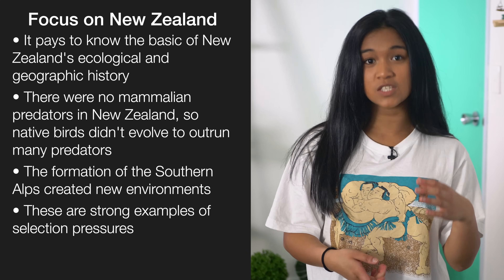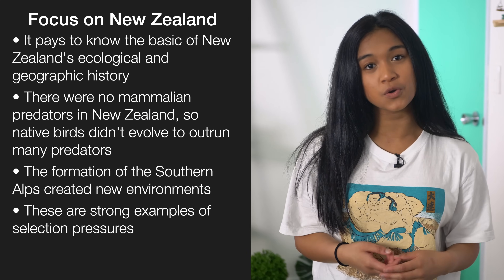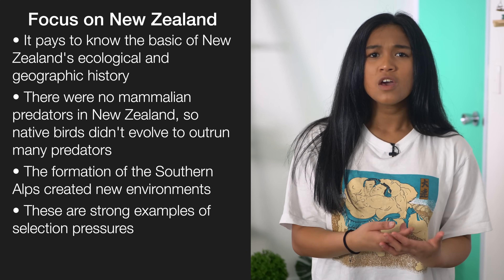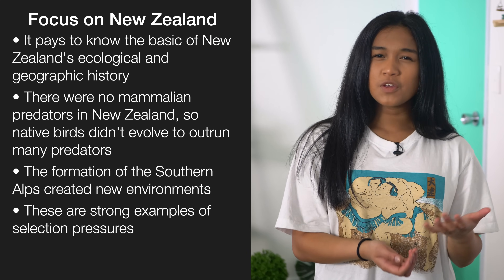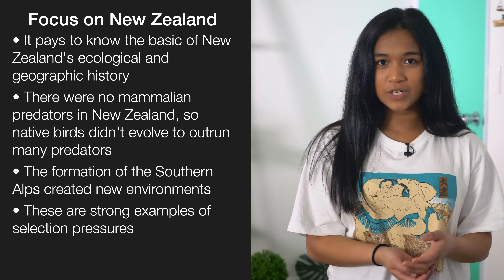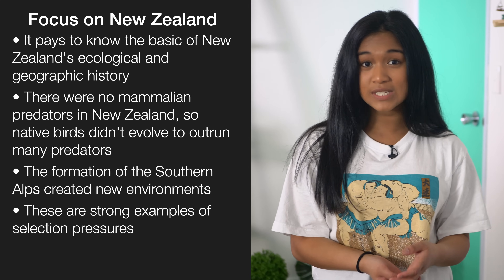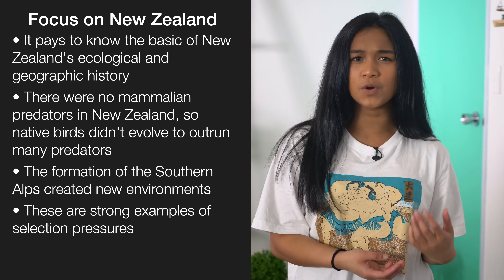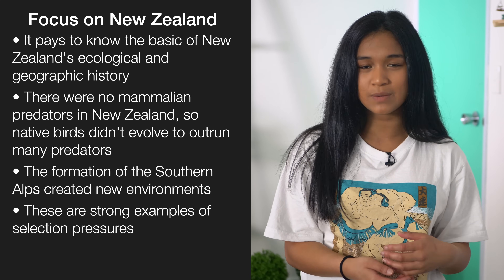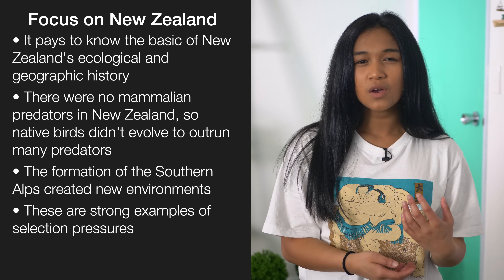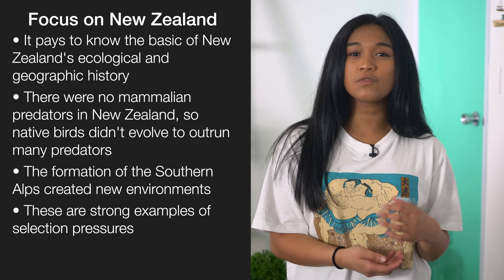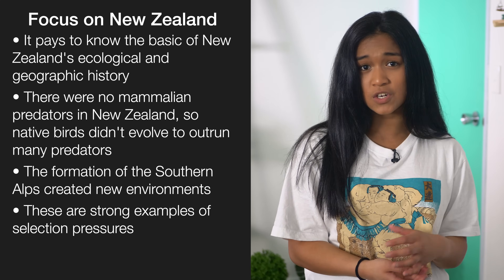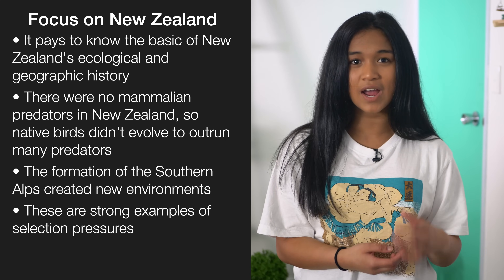Because this paper generally focuses on New Zealand's species, it's really helpful to know the basics of New Zealand's geographical and ecological history. For example, there were no mammalian predators in New Zealand until relatively recently, so native birds didn't have to evolve to outrun many predators. Or things like the formation of the Southern Alps, which created new climates and environments.